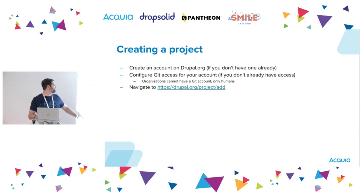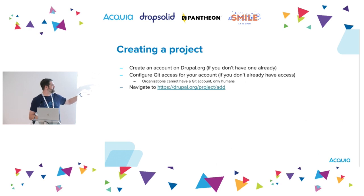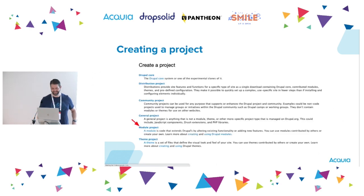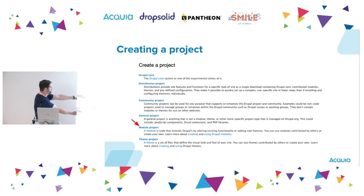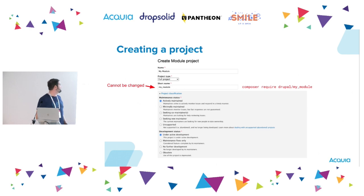To get started, navigate to Drupal.org/project/add. When you head there, you'll get to a "Create a project" page. There are different types of projects, but we're only going to look at the module project. This is just a Drupal form — the name is the human-readable title and it can be changed later. Below that is the project type; select "full project" here. There's still an option for sandbox but that's been deprecated, so don't use it.